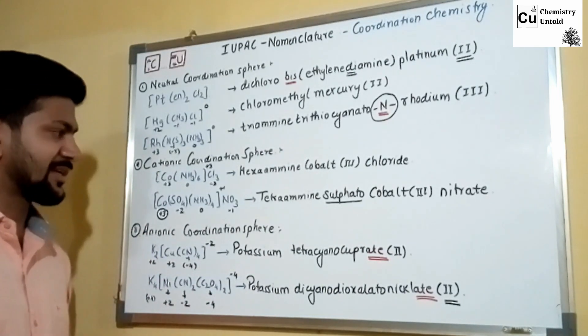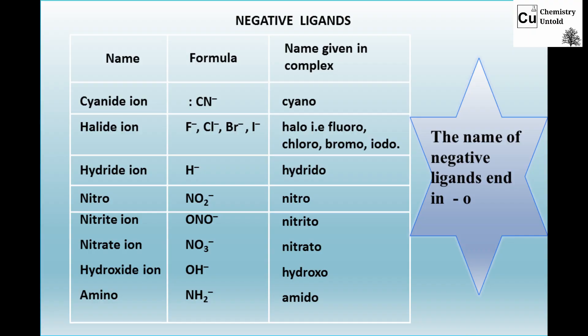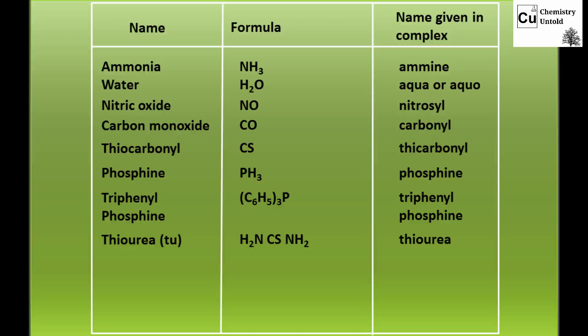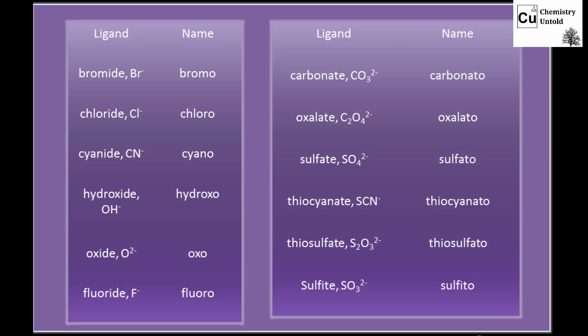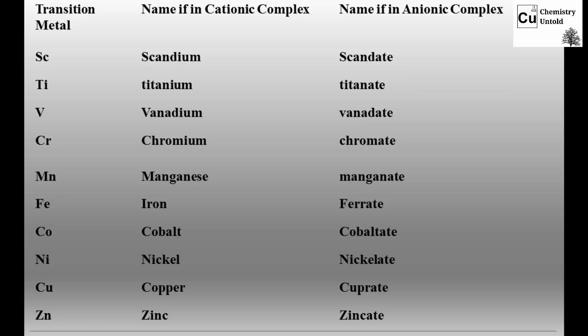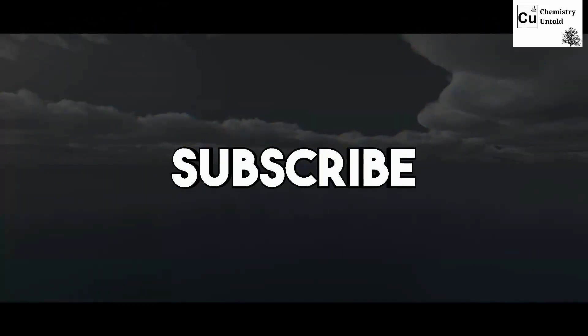This is how you can write the names of all coordination compounds that appear in your textbook and board exams. At the end of this video, you will find a list of ligand names and the modified metal names to use when your complex carries a negative charge.